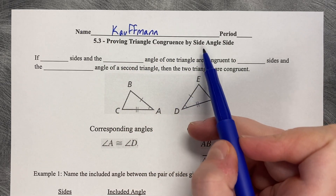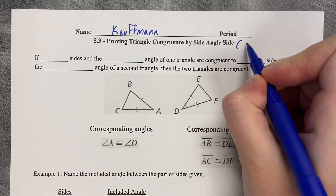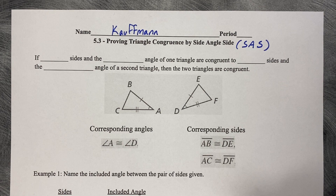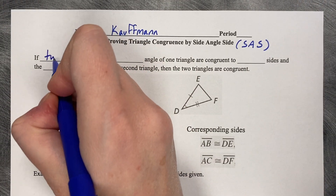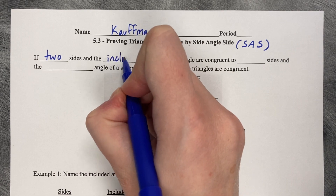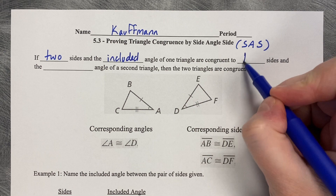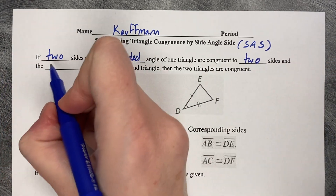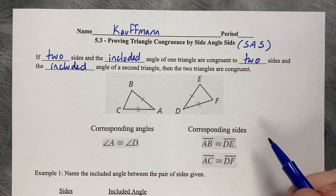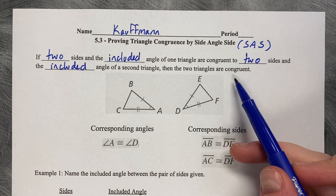Proving Triangle Congruence by Side-Angle-Side, which we'll shorthand to SAS. If two sides and the included angle of one triangle are congruent to two sides and the included angle of a second triangle, then the two triangles are congruent.